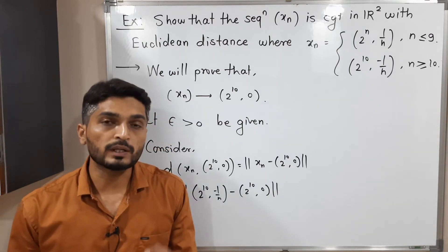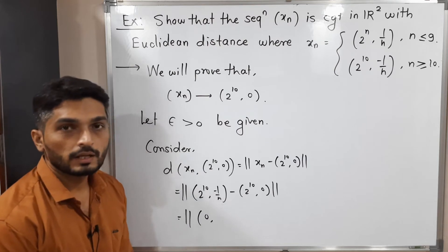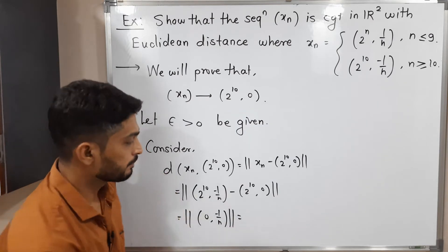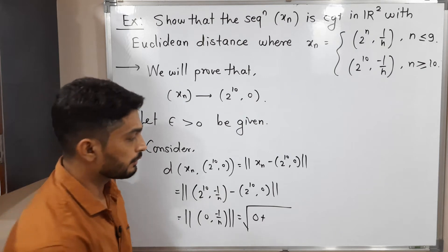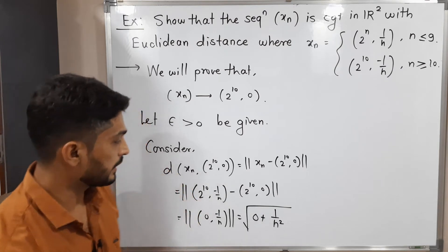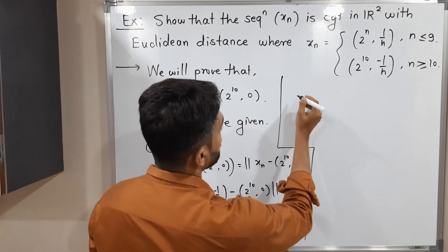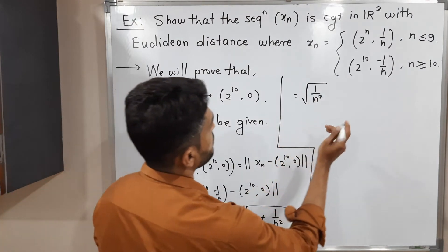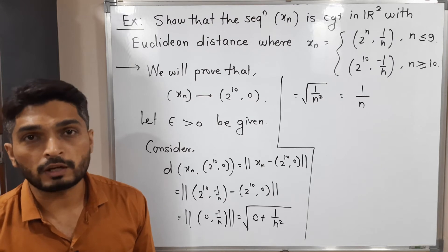Performing component-wise subtraction: 2 raised to 10 minus 2 raised to 10 gives 0, and minus 1 by n minus 0 gives minus 1 by n. Using the definition of norm, we get the square root of 0 squared plus (minus 1 by n) squared, which equals the square root of 1 by n squared. Since the square of any negative number is positive, this simplifies to 1 by n. Let us call this equation 1.